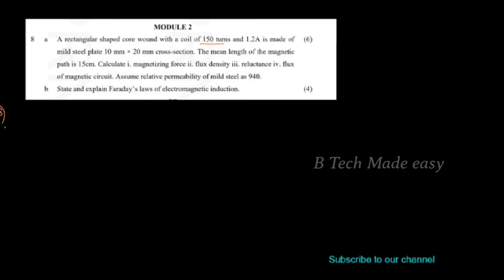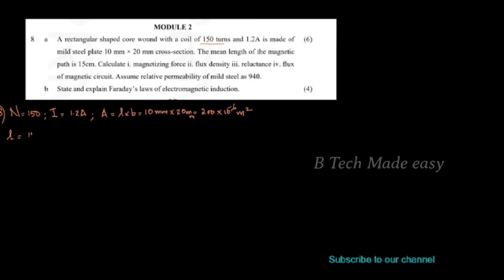The given data: number of turns N is equal to 150, current is 1.2 ampere. The cross-sectional area of the rectangular steel plate is 10 mm into 20 mm, that is 200 into 10 raised to minus 6 meters square. The mean length of the magnetic path L is equal to 15 cm, that is 15 into 10 raised to minus 2 meters.